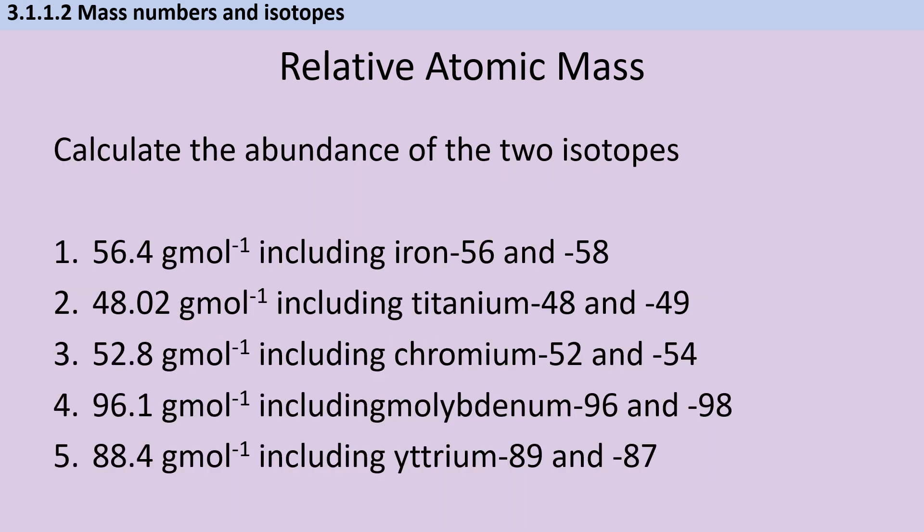Here are five more questions following the same format. So we've got our relative atomic mass, and then the two isotopes, so iron-56 and iron-58, for instance. The first thing you need to do is to write an expression that has one of them being X, and the other one being 100 take away X. Then you need to solve that expression and work out what the abundance of the two isotopes will be.